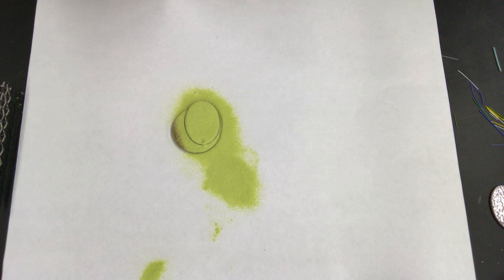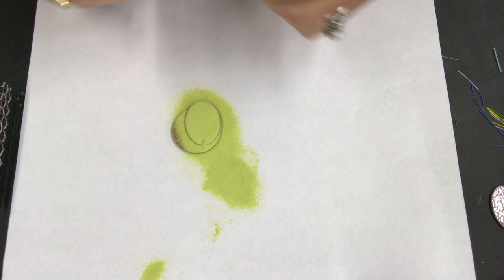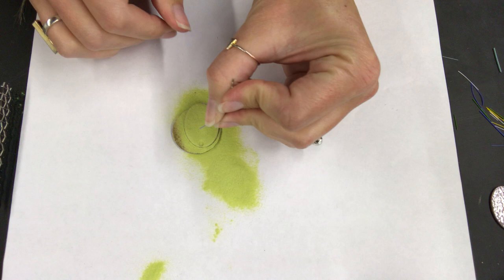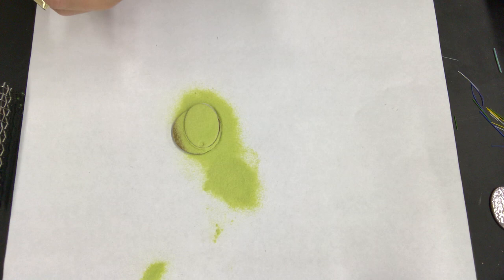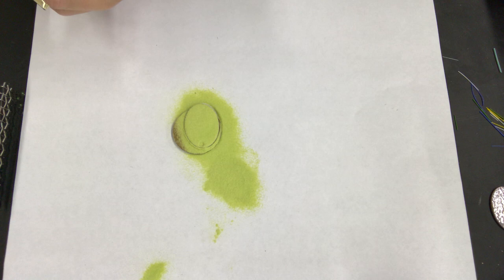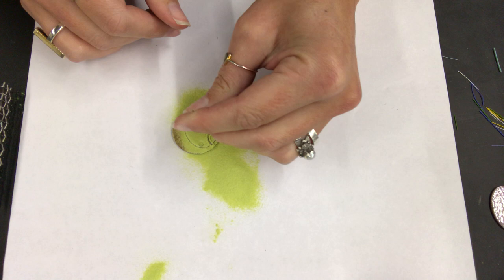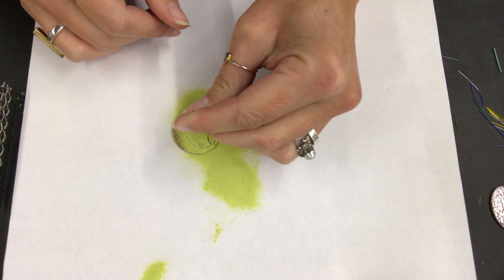Okay, so now the fun part is sgraffito. So you're basically just drawing in a design by scratching it away. So I'm just using a piece of wire here. Anything with a tip to it would work. A tweezers would also work. Anything like that. But you're basically just scratching out the enamel to show the color underneath.